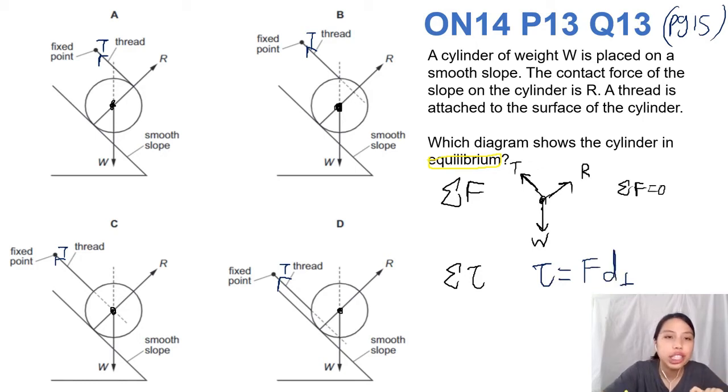Let's check through it. First one, in A - R is acting on the pivot so R is not going to cause any torque at all. W is also acting on the pivot, so there's zero torque. T has some perpendicular distance here, so it's going to cause a torque. This one will have some torque because of T, anticlockwise. So nope, not that one.